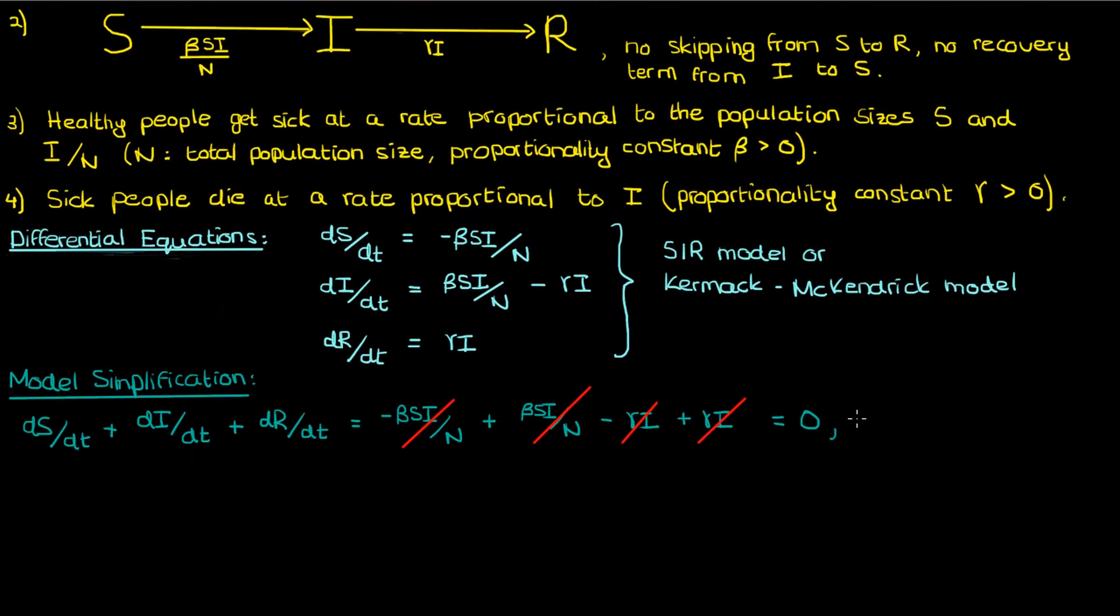Since the sum of all these derivative terms is 0, we can integrate both sides with respect to t. When we do that we find that S plus I plus R is an integration constant, which is really just the total number of people in the population N. And this equation makes sense if you add up all the healthy people, all the infected people, and all the dead people, you get the total population size N.